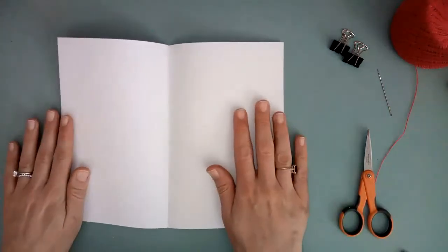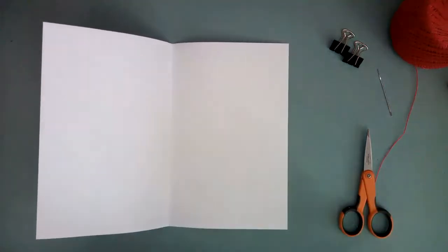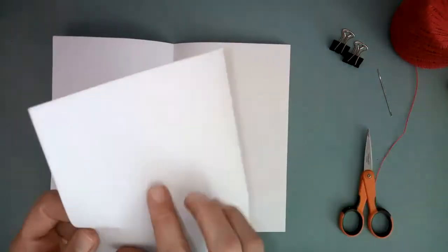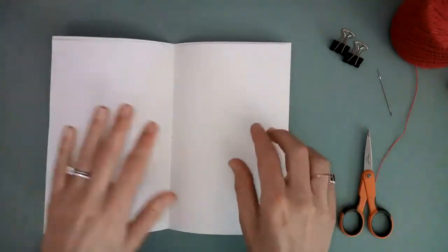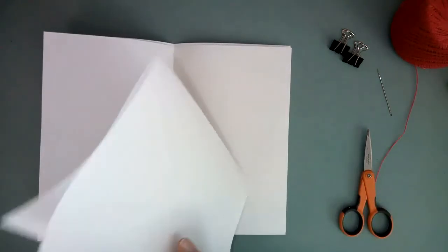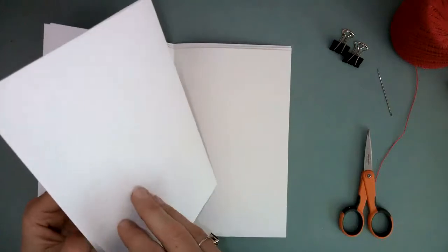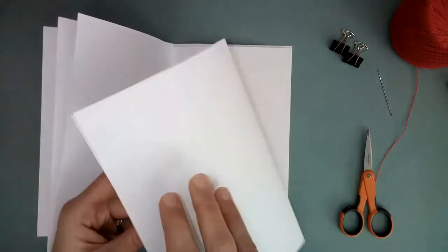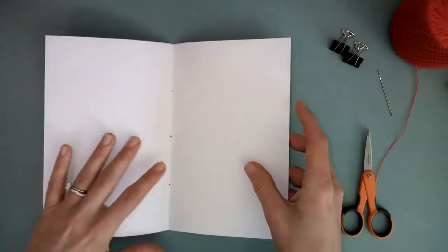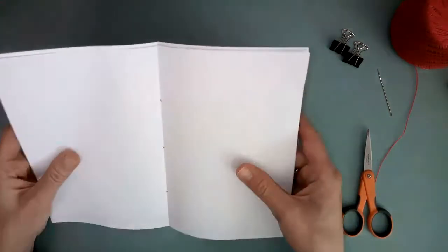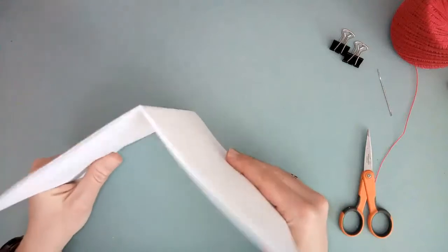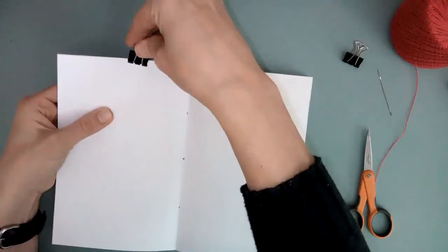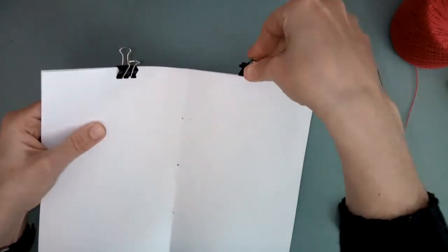Once you've got all of those sheets folded, you'll unfold each one. And you'll nest them one inside of the other. So one, two, three, four, five. And I've got an extra piece over here so I'll just add that in. I'm going to now tap my papers against the table and that just lines them all up. And clip them together with my binder clips.